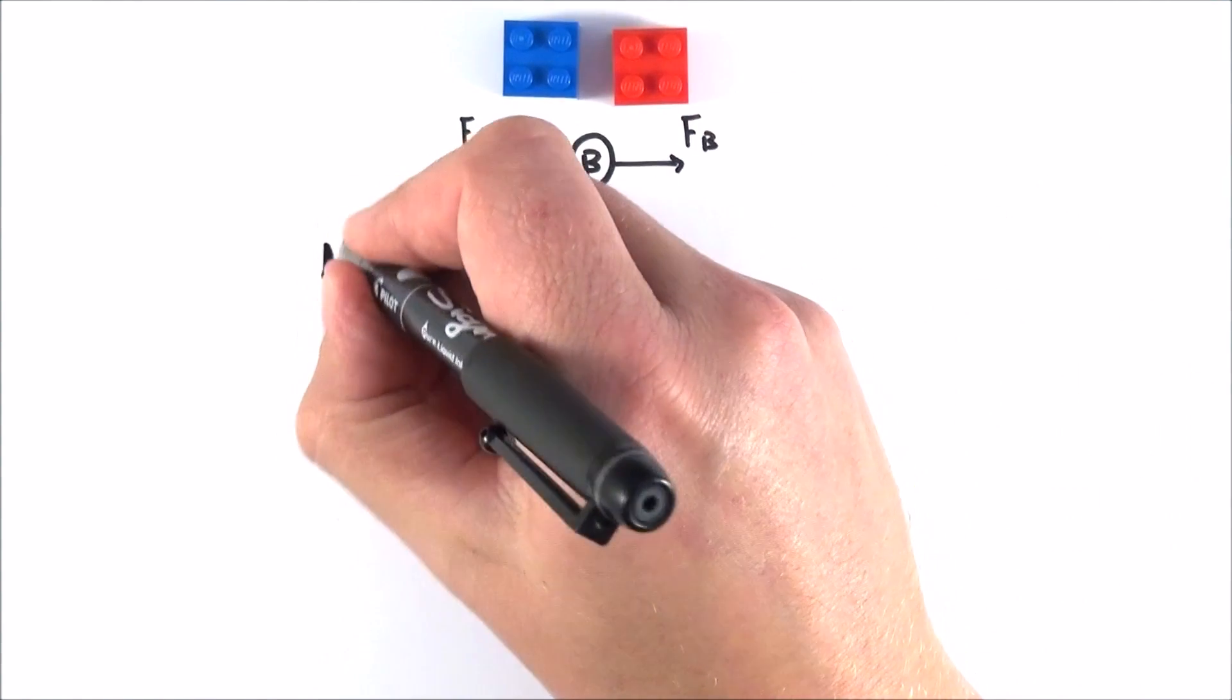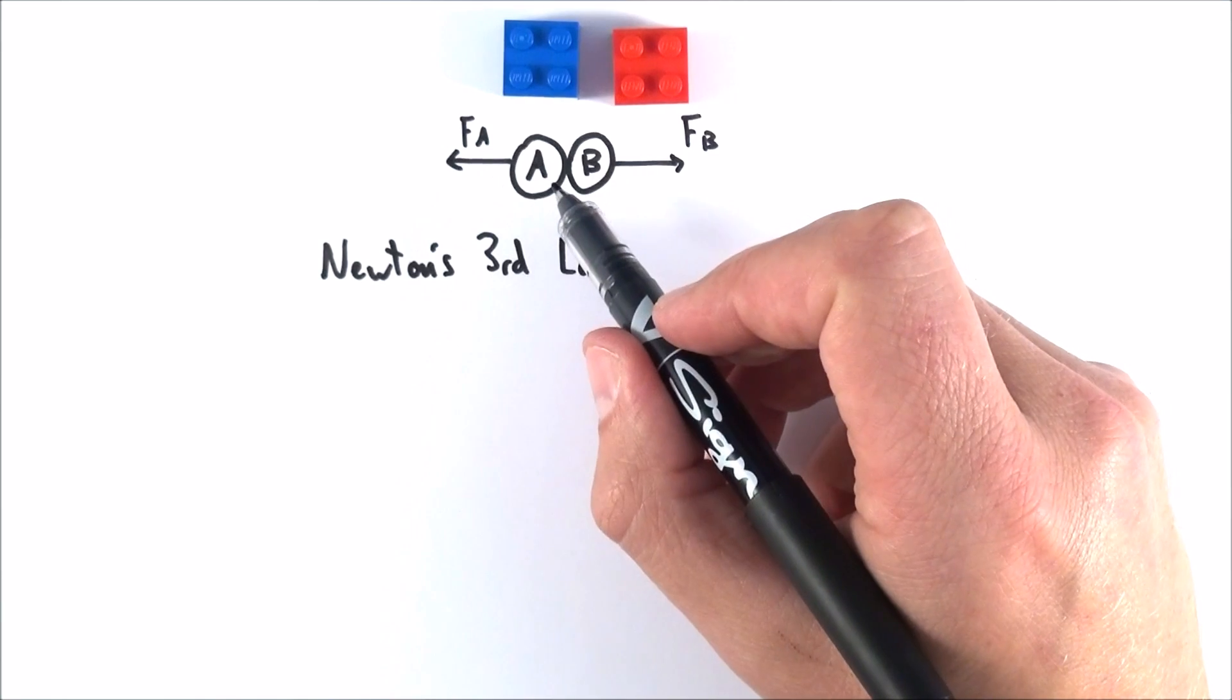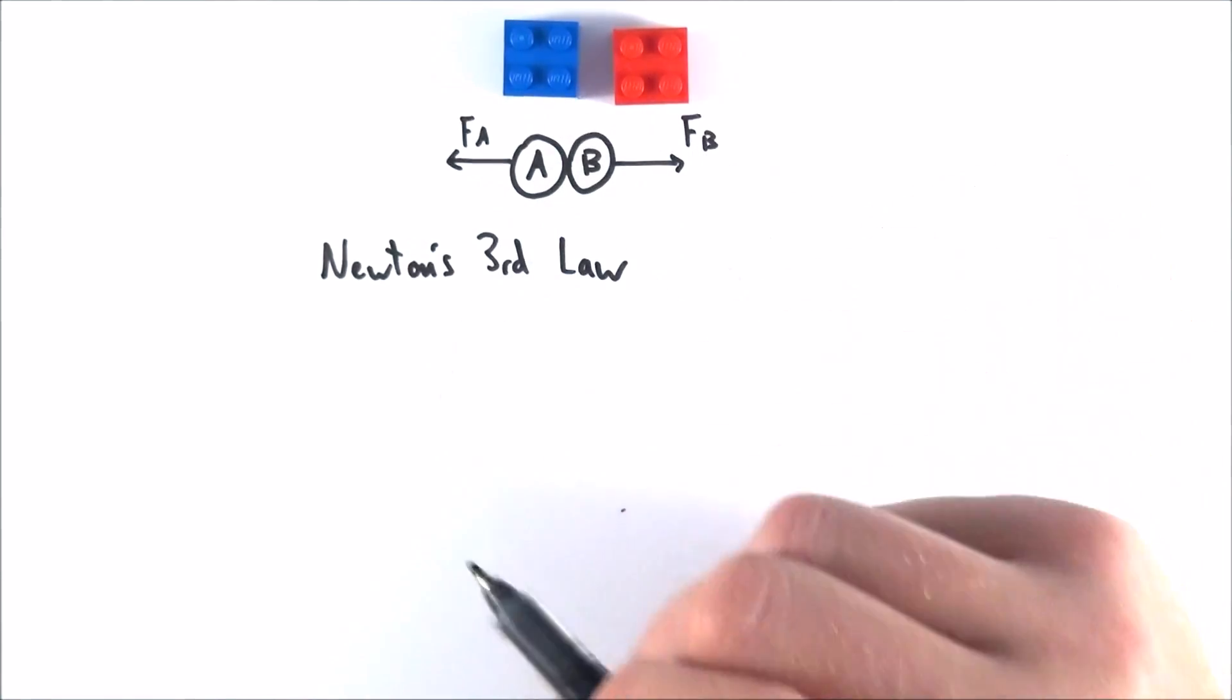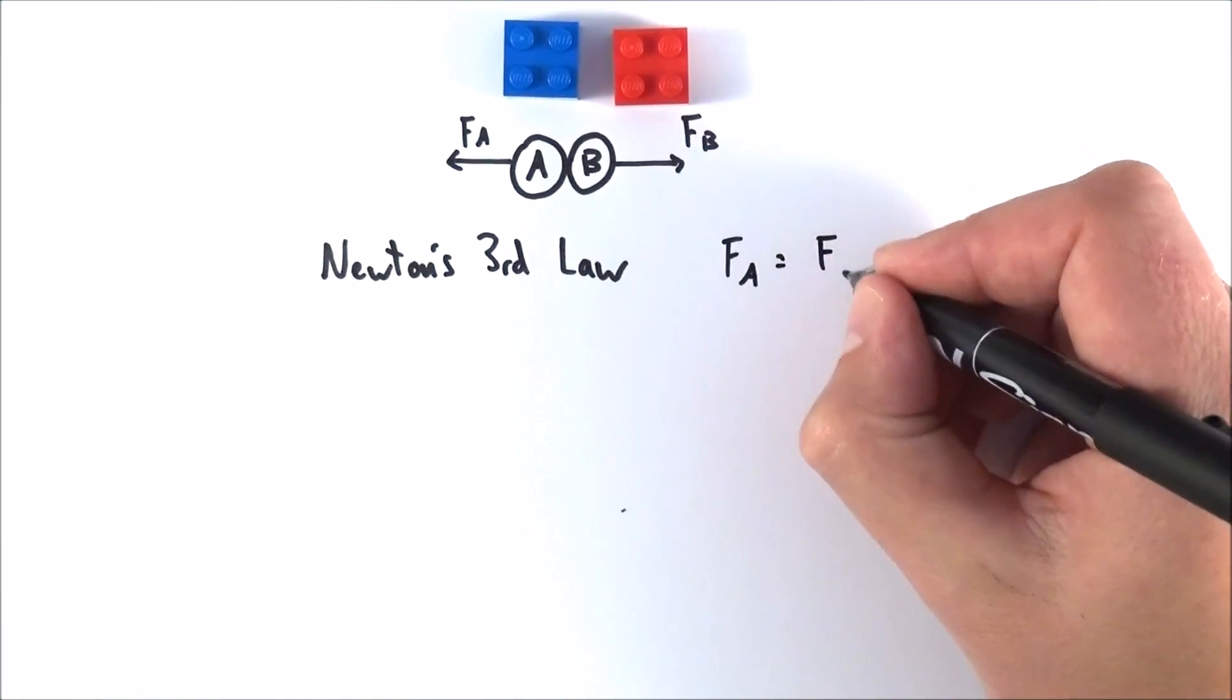Now by Newton's third law, the size of force A on object B is equal to the size of force B on object A, and what we can say then is that FA is equal to FB.